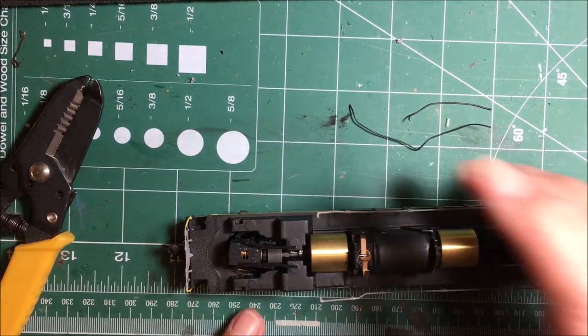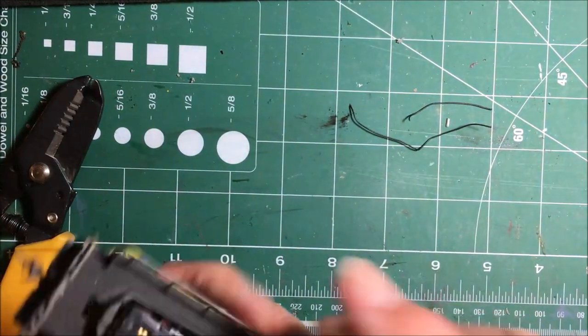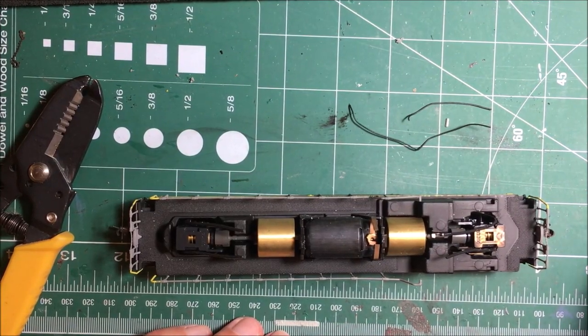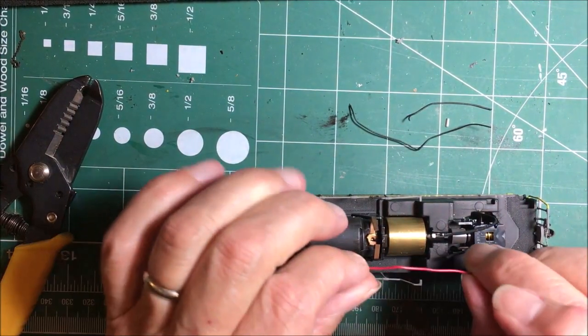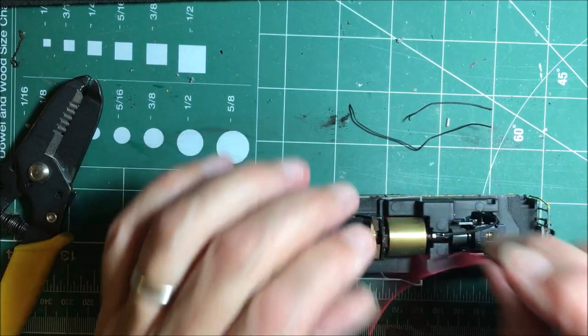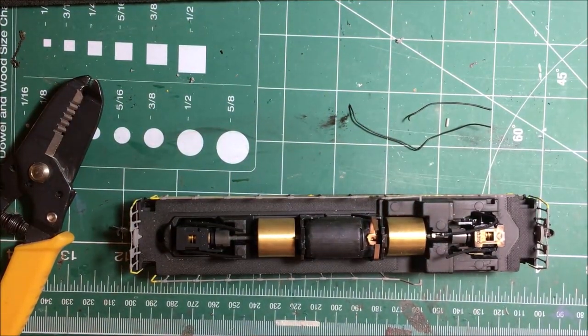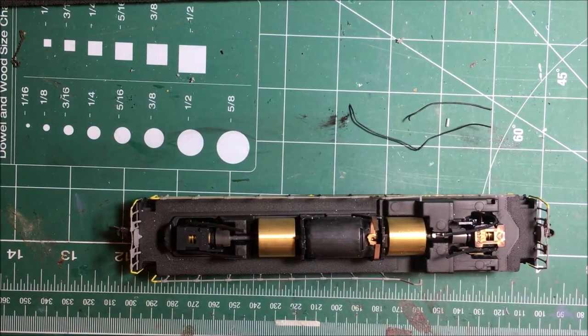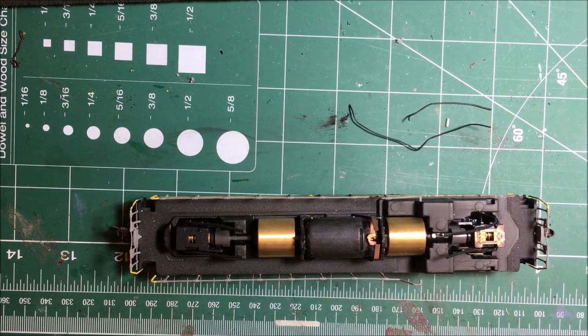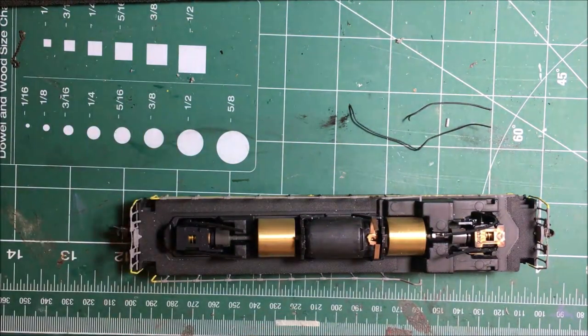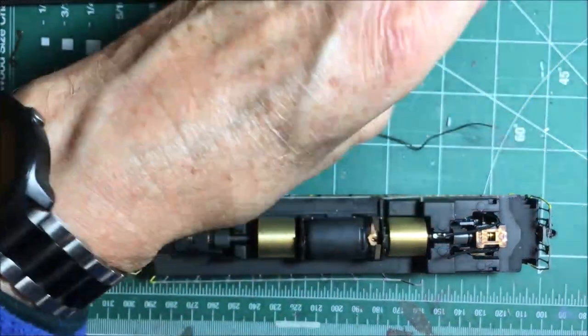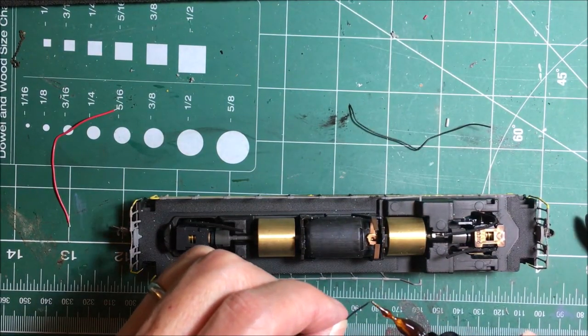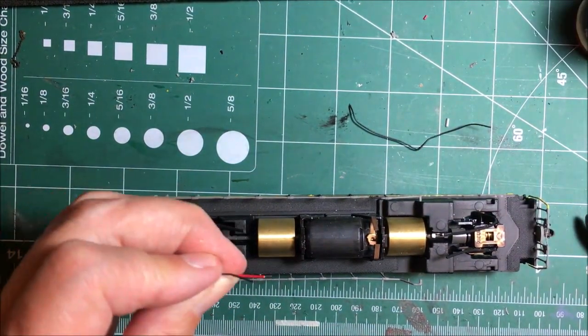Now, this is the front of the locomotive. I usually work with the front to the right. Let's turn it around. So this is the front of the locomotive. Red is going to be on the right. Black is going to be on the left. So I'm going to have to stretch these wires a little bit.